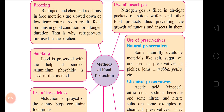Methods of food preservation or protection. First is freezing — refrigerators are used for freezing food. Due to the low temperature of freezers, biological and chemical reactions in food materials are slowed down, and food remains unspoiled for a longer period. Second is smoking — when food is preserved with the help of smoke, it is called smoking. Aluminium Phosphide is used in the smoking method.